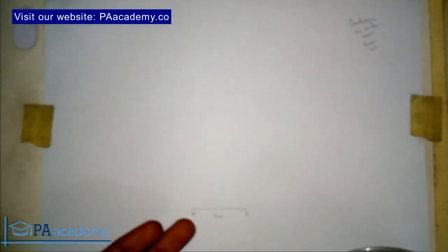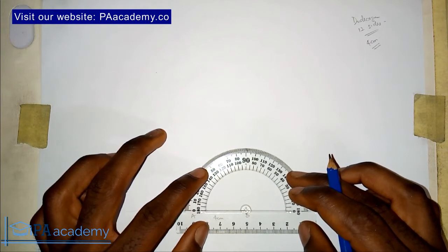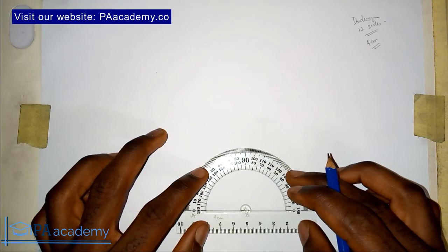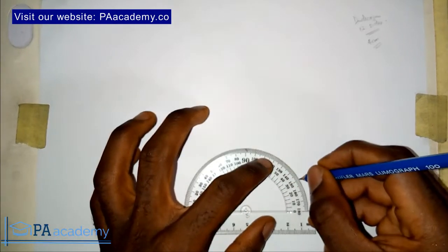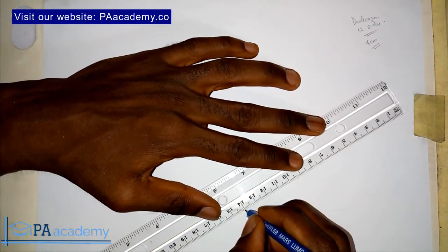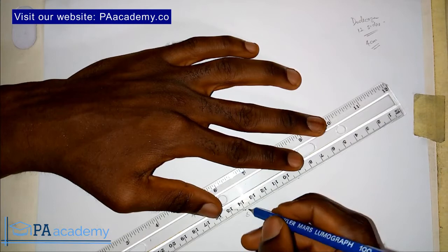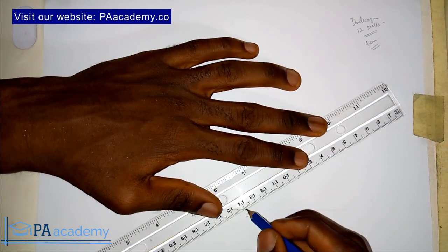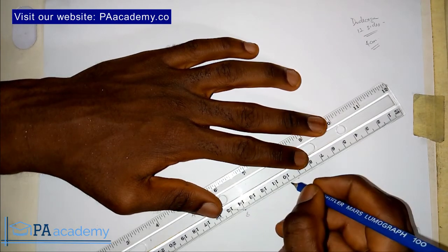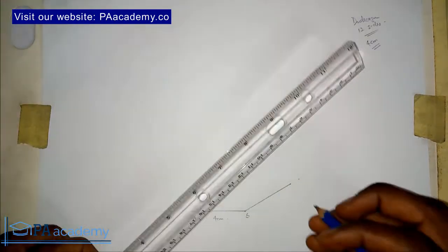The next thing we are going to do is bring in our protractor and place it on point B. Once I place my protractor on point B, I will mark 30 degrees. From point B, I'll mark that 30 degrees and draw a faint line. On that line, I will measure the four centimetres — one, two, three, four. So this is where my four centimetres is, and I can make that very bold. I'll call this point C.